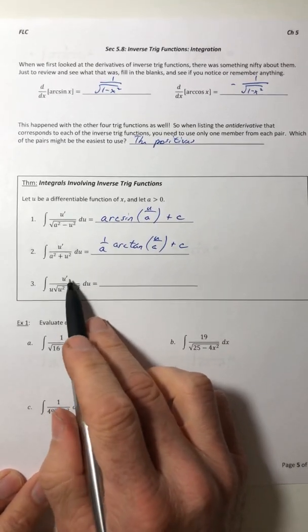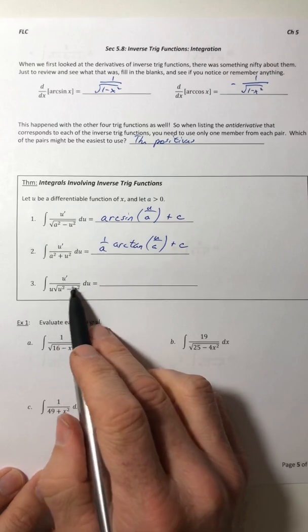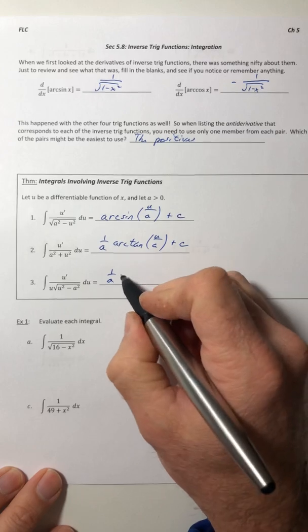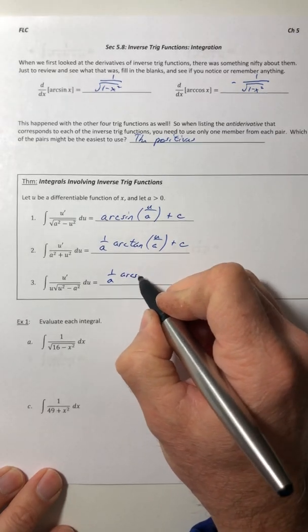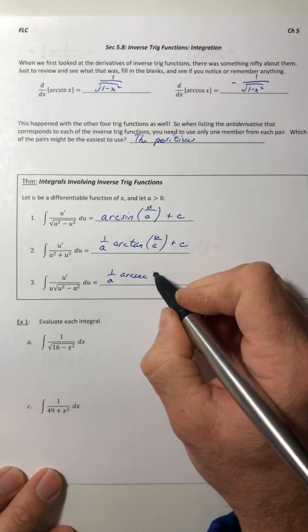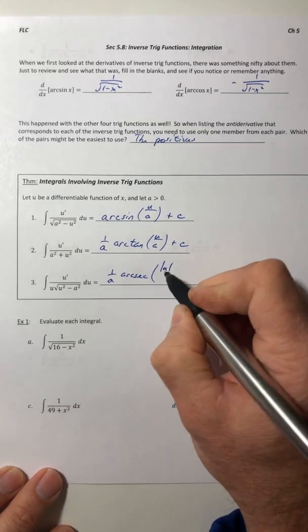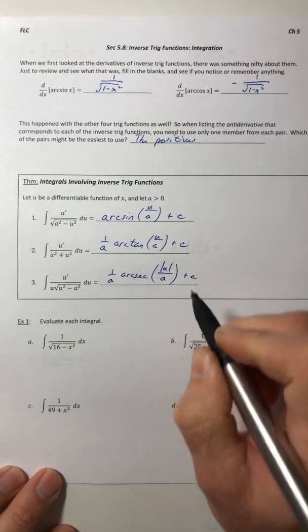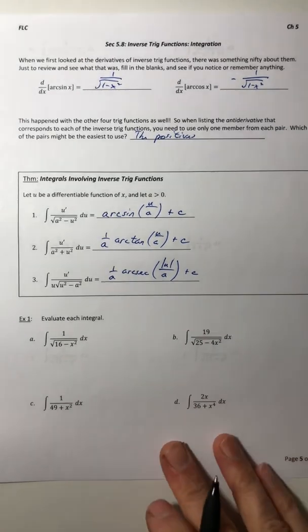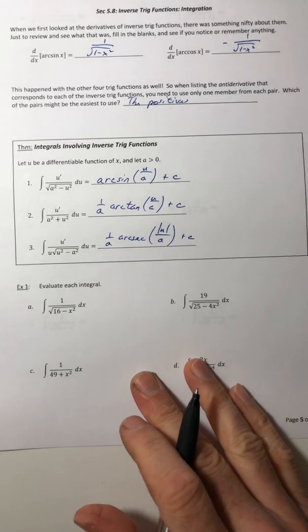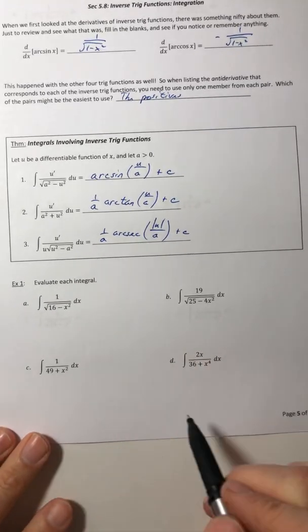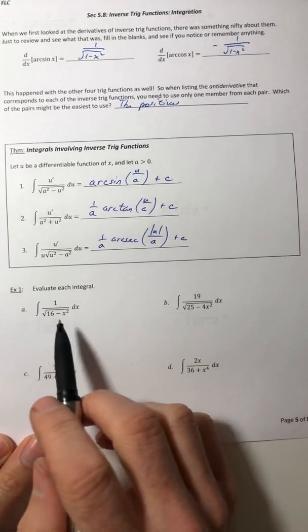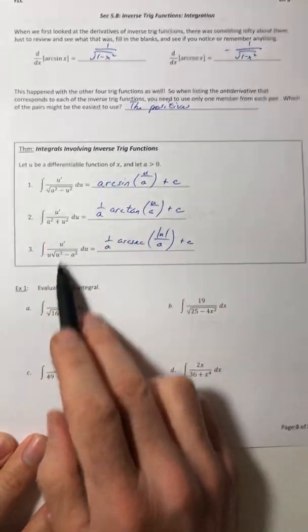And then the last one, u prime over u root u squared minus a squared. That becomes 1 over a times arc secant of the absolute value of u over a plus c. So those are your three formulas. Let's go ahead and try some examples with those. What I usually do when I look at these, I got to remember I'm trying to fit one of these three formulas.